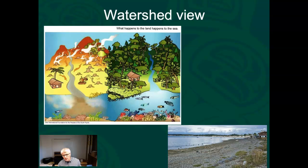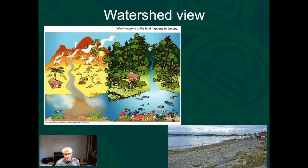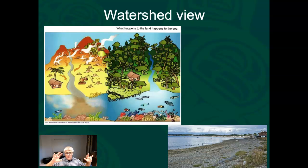Another topic we'll delve into is a watershed view. We talked about the Salish Sea as a watershed — what does that mean in the context of ecosystem management? If we want the sea to be healthy and be able to go out and dig clams without getting sick, we can't just look at the seawater. We need to look at the whole watershed and how modifications go from the mountaintop to the seafloor. Having that more integrated view is an aspect we'll bring throughout the class.